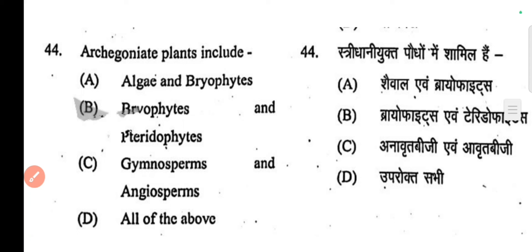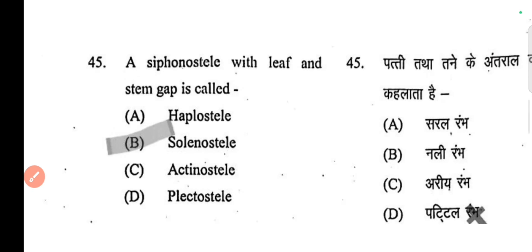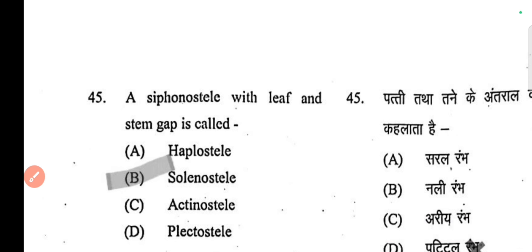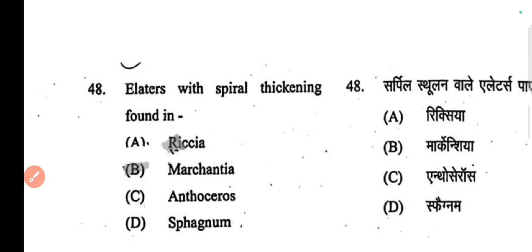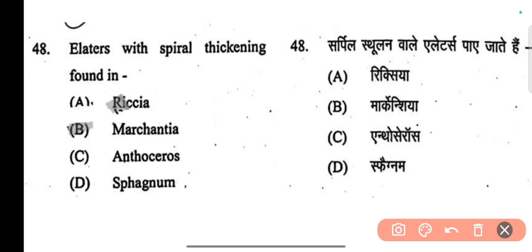Next question: embryophyta plants include Bryophyta and Pteridophyta. Next question: a simple stele with a leaf gap is called a solenostele. Next question: elators with spiral thickening are found in — the correct answer is Marchantia.